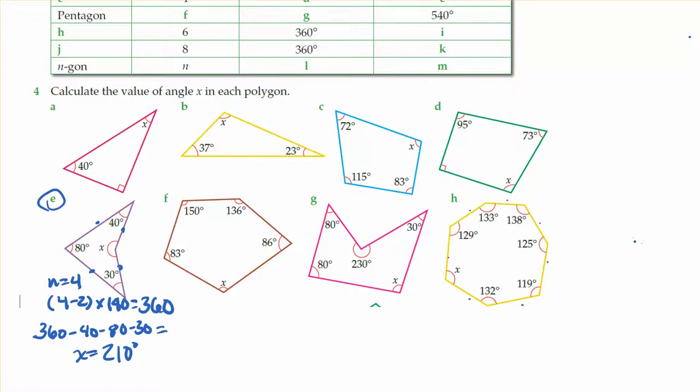So again, on that one, we would have n equals 7. And then using your rule, which says n minus 2 times 180, we would say 7 minus 2 times 180 to figure out how many degrees are going to be in their total, and then you can subtract out from there.